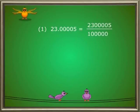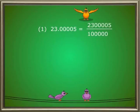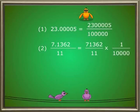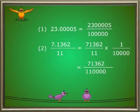Solutions. First: 23.00005 is equal to 2300005 divided by 1 lakh (100000). Second: 7.1362 divided by 11 is equal to 7.1362 divided by 11, multiplied by 1 by 10000, which is equal to 71362 divided by 1100000.